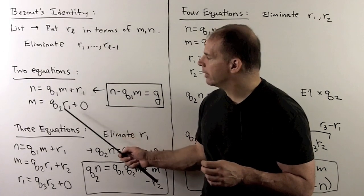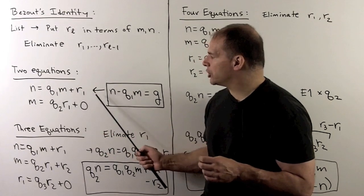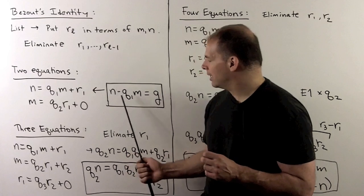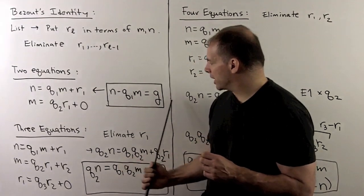Now, we have two equations. We know in the first equation, all we need to do is to push the term with the m to the other side. Then, we have an equation like in Bézout's identity.